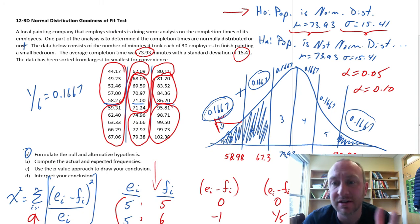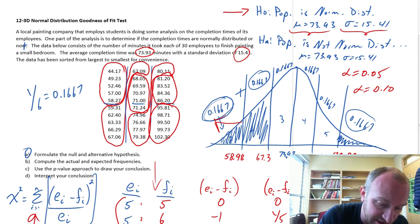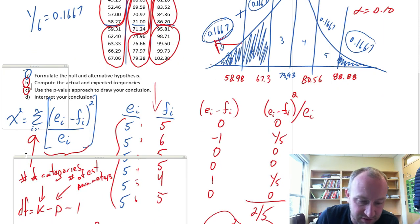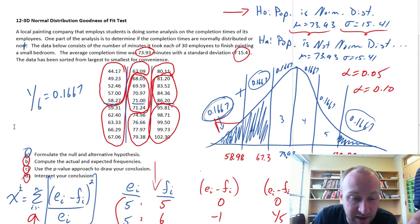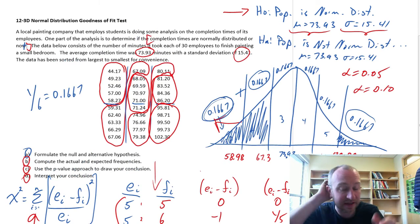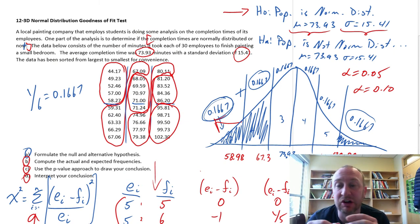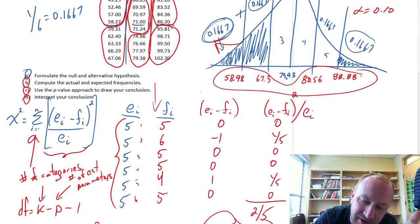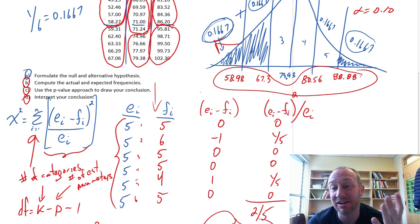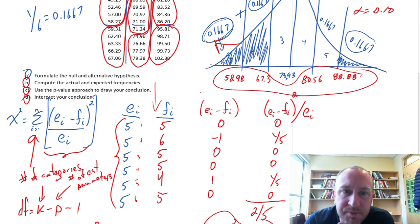So we're unable to say that it is not normally distributed. We did all of our calculations for our frequencies and used the p-value approach to draw our conclusion. Here it means that these completion times of these painters painting the bedrooms, we're unable to say they're not normally distributed. The evidence supports the null hypothesis quite strongly. Some of these calculations I know are a little bit tedious. Probably these ones here are the most tedious part. But once that's done, I think it goes fairly smoothly. I hope that was helpful. Thanks again for watching. Bye-bye.